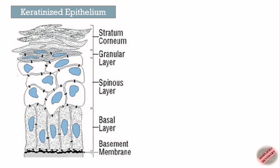As I have already mentioned, the keratinized epithelium contains four layers: stratum basale (the basal layer), stratum spinosum (the spinous layer), stratum granulosum (the granular cell layer), and stratum corneum (the corneal layer).